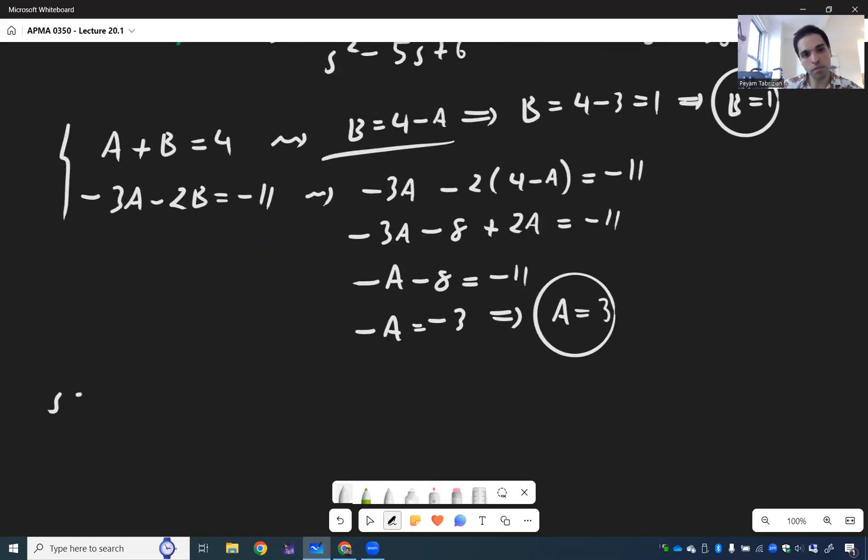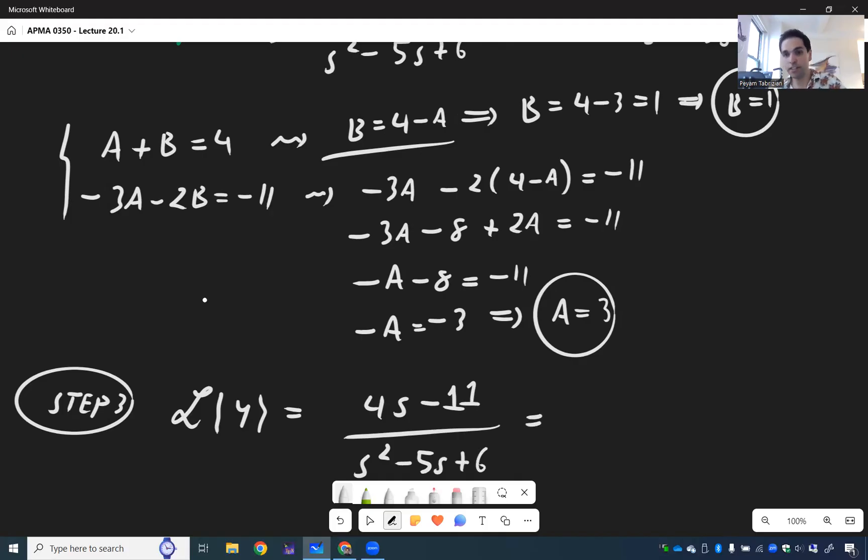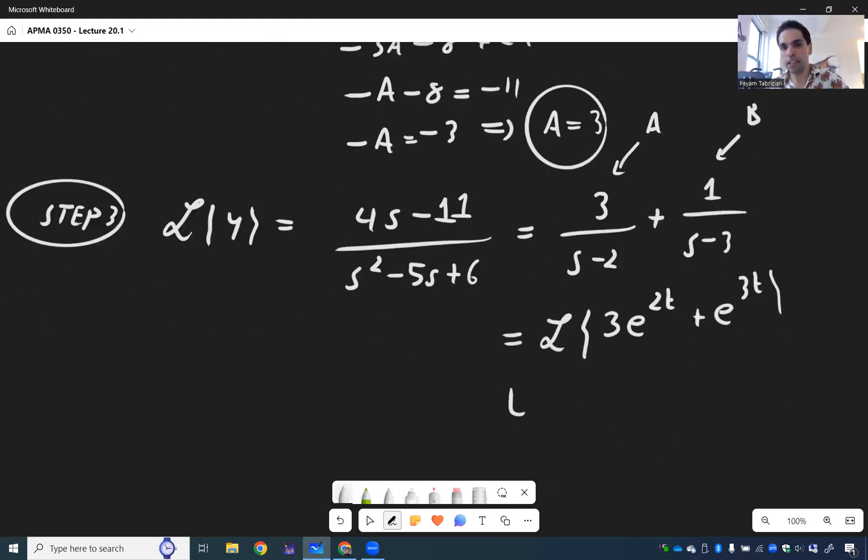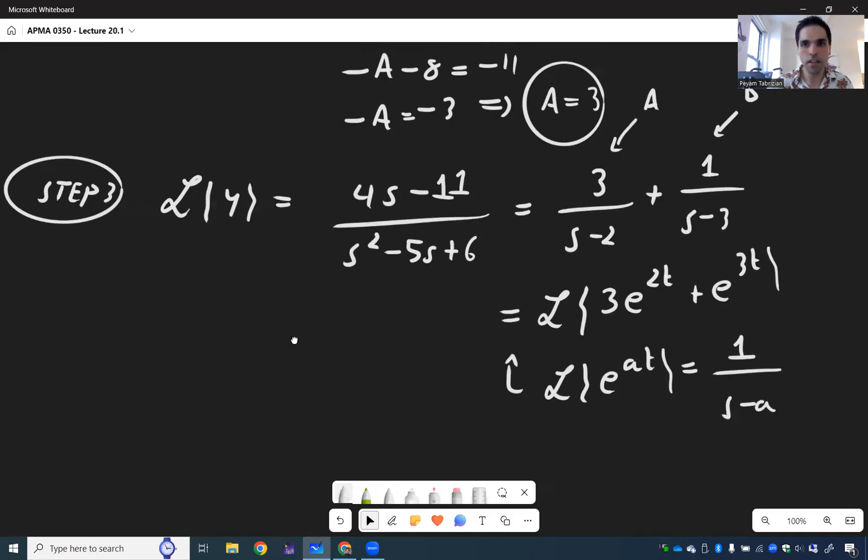So what does that tell us? So let's backtrack a bit. So far, we found Laplace transform of y was 4s minus 11 over s squared minus 5s plus 6. Using partial fractions, we wrote this as 3 over s minus 2 plus 1 over s minus 3. And now you see the uncovering becomes much easier. Because if you remember your formulas, that just becomes the Laplace transform of 3e to the 2t plus e to the 3t. Where here, we just use that the Laplace transform of e to the at is 1 over s minus a.